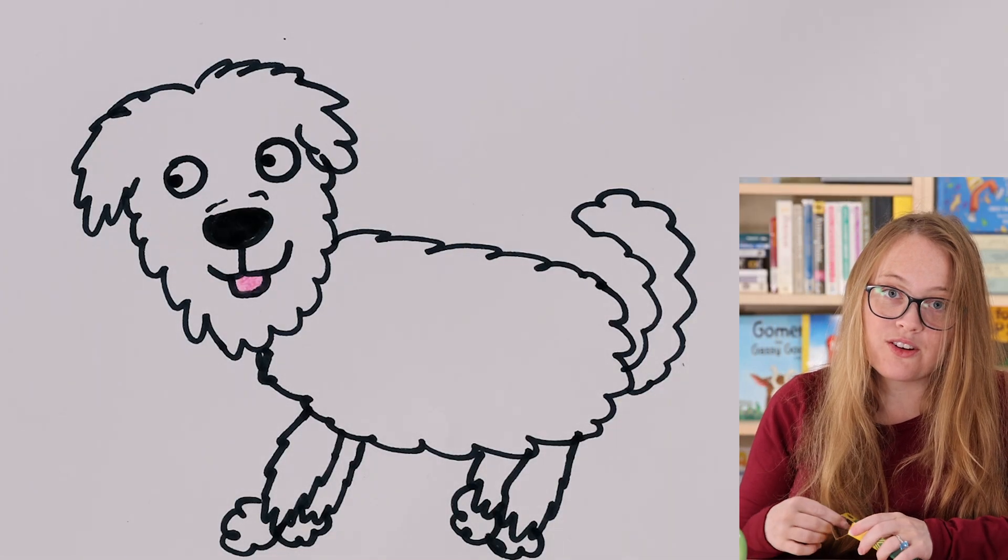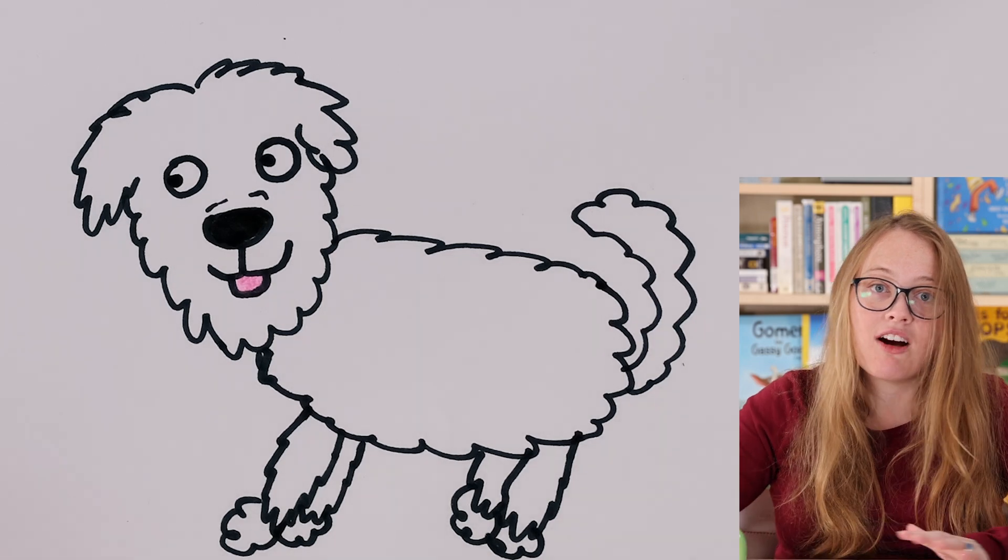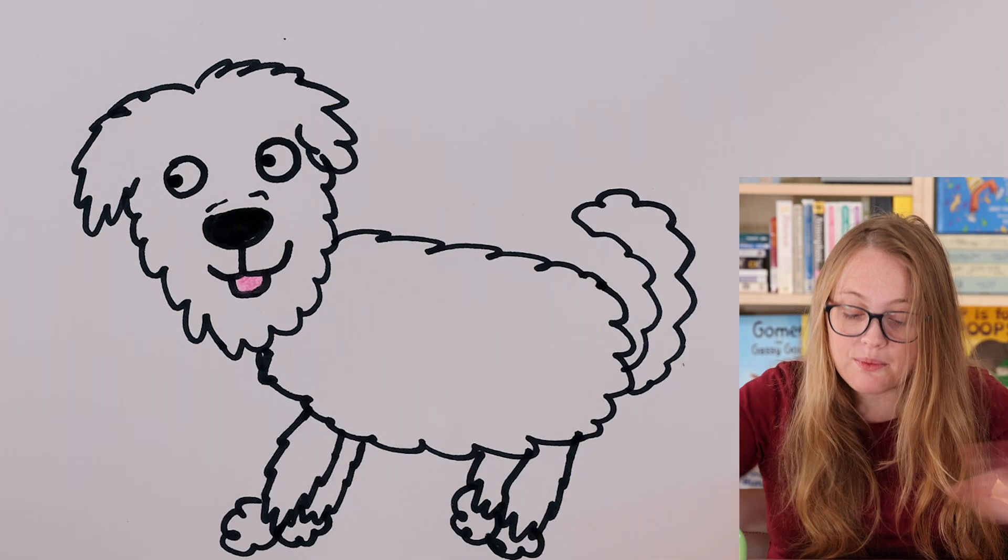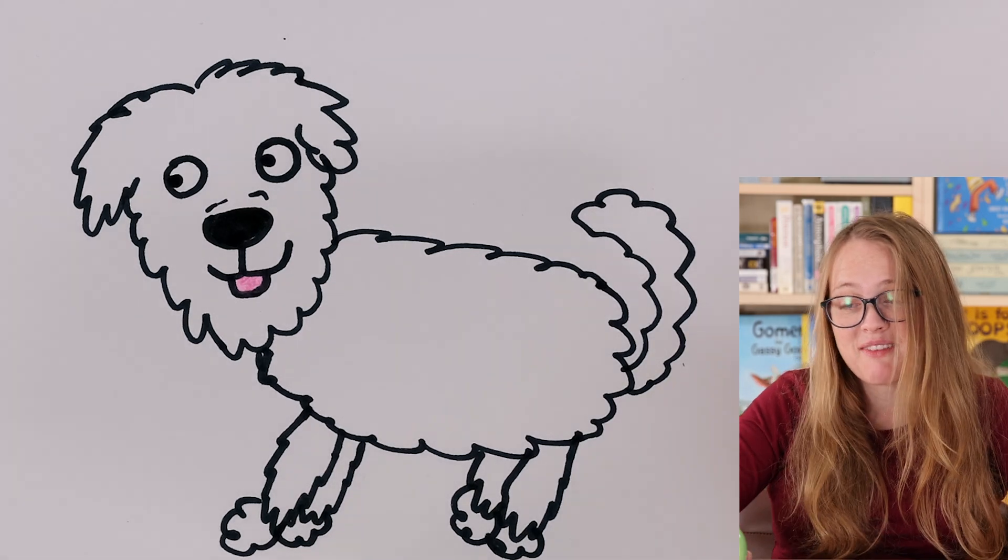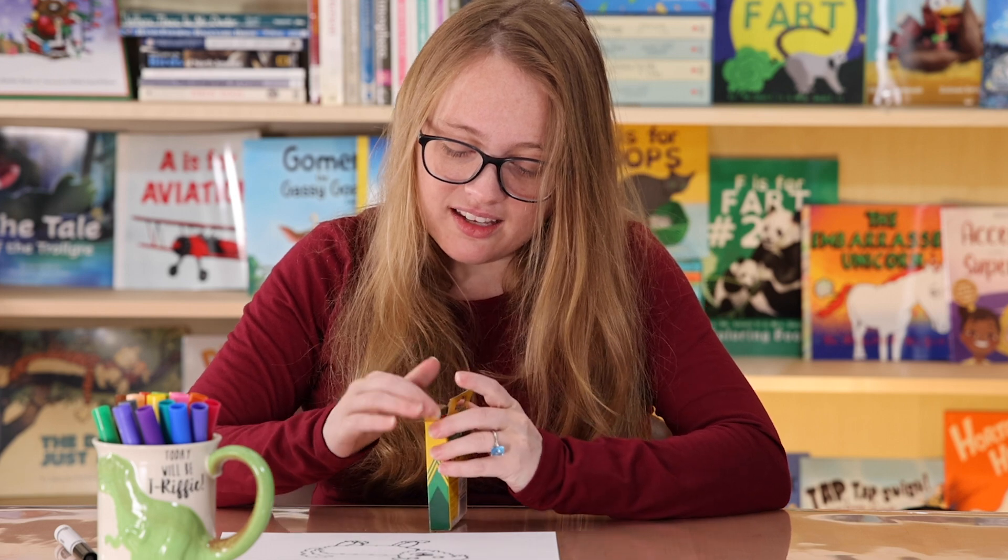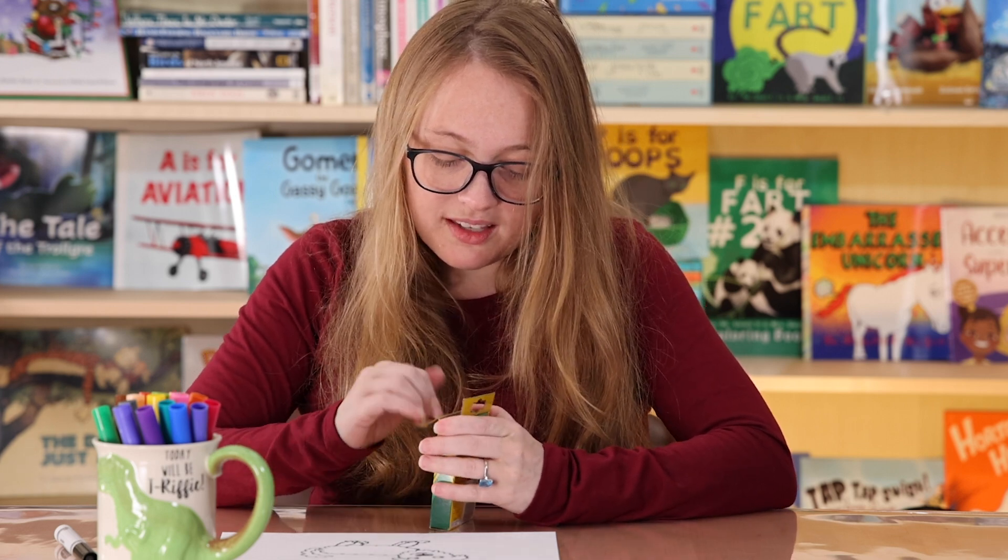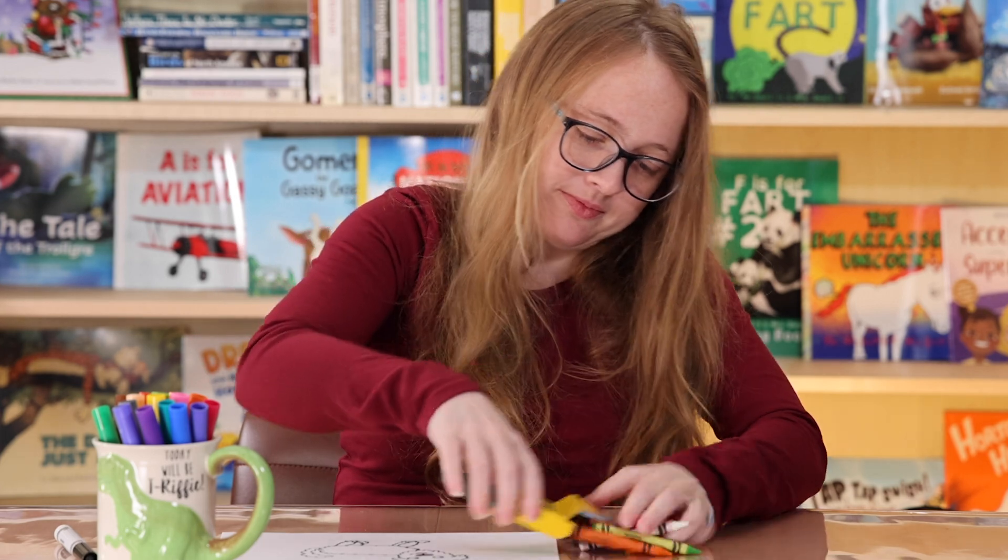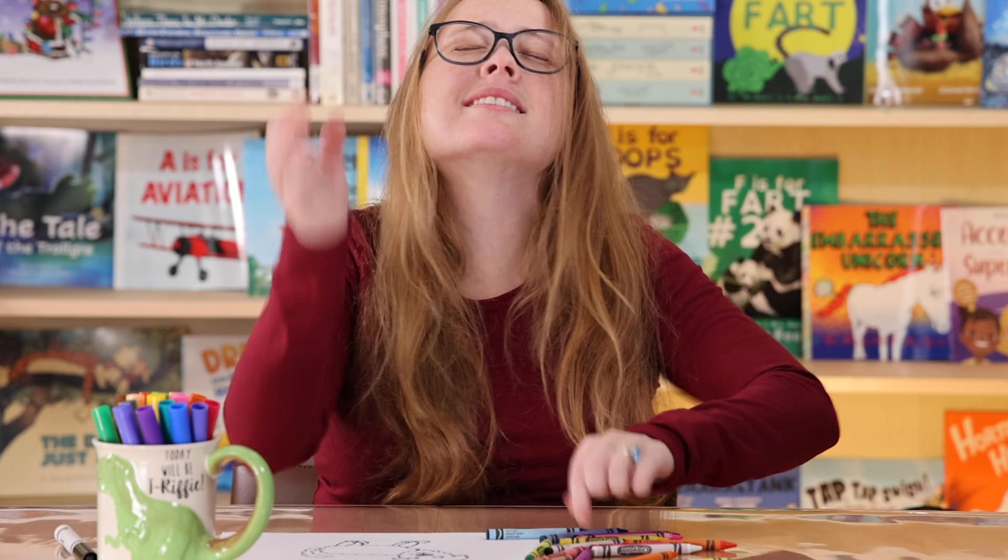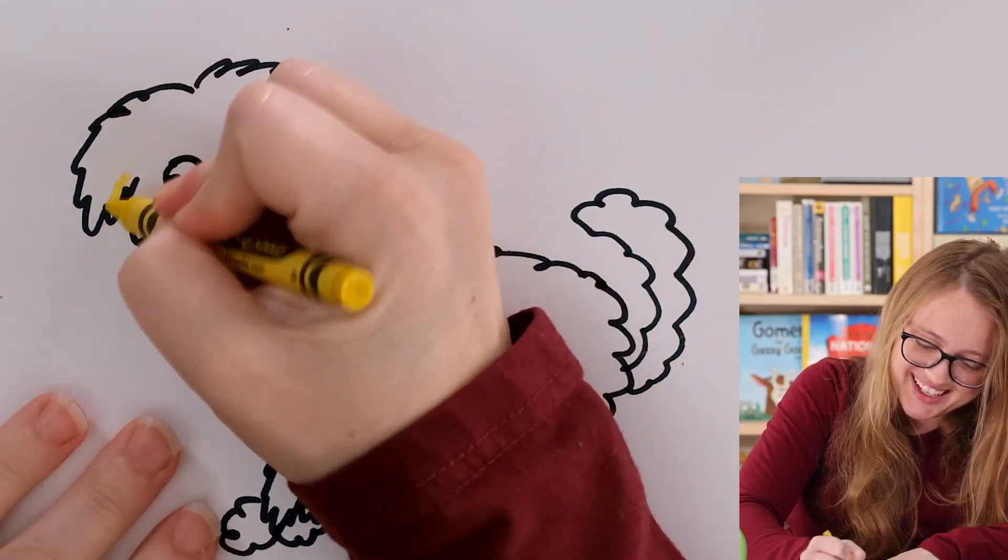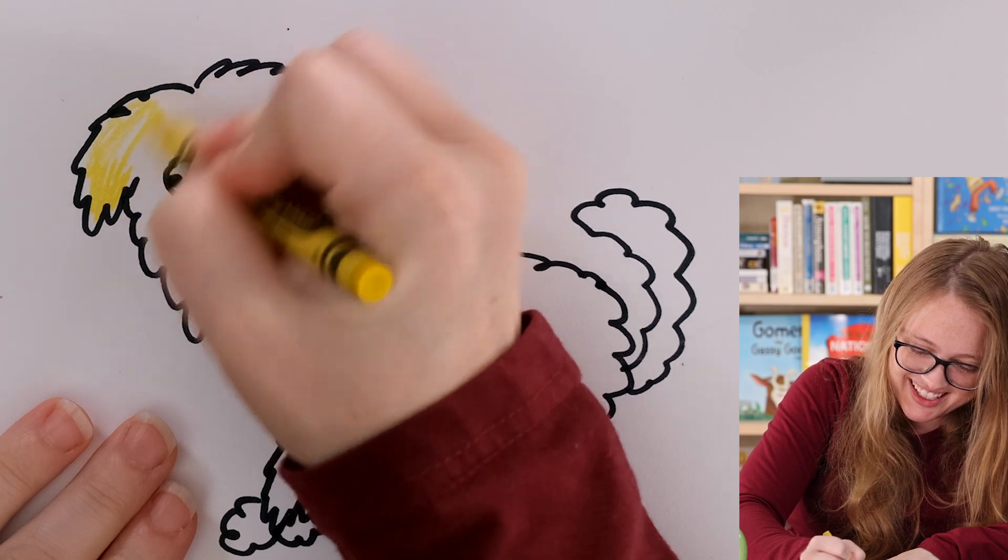Now, what color do you want your doggy to be? Your doggy could be any color. It could be brown, or you could make it purple. You could make it a rainbow doggy if you wanted. It really doesn't matter. I think that my doggy is going to be... Hmm. I'm not sure. I think I'm going to just close my eyes. It's going to be yellow. All right. So, I color the doggy in yellow.